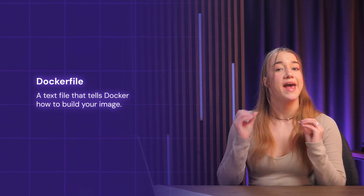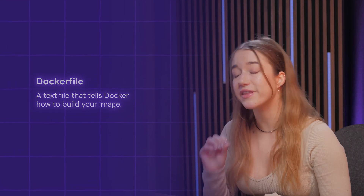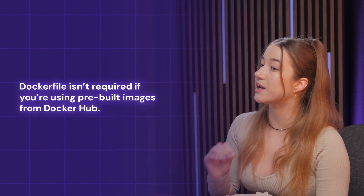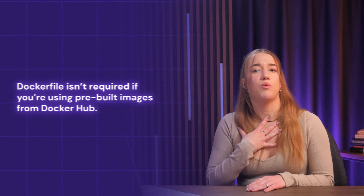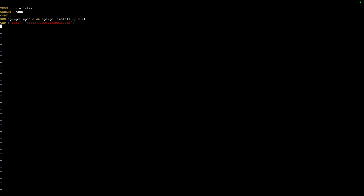Now let's move on to the Dockerfile, which is a text file that tells Docker how to build your image. It's important to note that a Dockerfile is not required if you're using a pre-built image from Docker Hub like MySQL. Unless you want to customize or extend those images, you can skip ahead to where I show you how to run the image from Docker Hub directly. Each command in a Dockerfile creates a new layer in your Docker image.